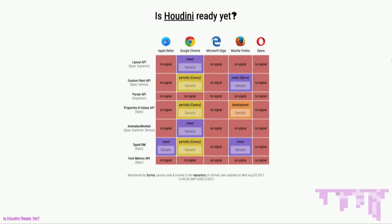Chrome Canary is furthest along, with some partial implementations. In fact, the stable version of Chrome actually has some working implementations of older versions of the Houdini specs. But Houdini is not ready yet. That being said, there is some good stuff on the horizon. TypedOM has three browsers interested in it. Custom Paint and properties and values have two browsers interested. But there's a lot still going on. It's not ready yet — but we're going to talk about it anyway, because it's cool.